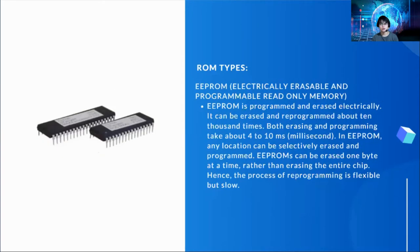The last type of ROM is EEPROM — electrically erasable and programmable read-only memory — which is programmed and erased electrically. It can be erased and reprogrammed about 10,000 times. Both erasing and programming take about 4 to 10 milliseconds. In EEPROM, any location can be selectively erased and programmed. EEPROMs can be erased one byte at a time rather than erasing the entire chip. Hence the process of reprogramming is flexible but slow.